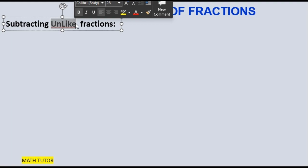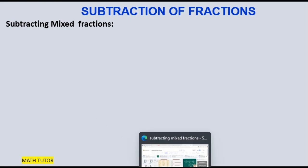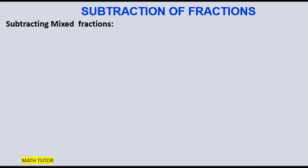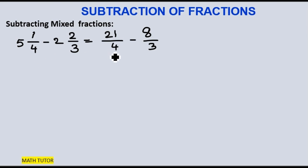Now we are going to see how to subtract mixed fractions. Let us take an example: 5 and 1 by 4 minus 2 and 2 by 3. This is a mixed fraction. You cannot subtract as it is — you have to convert them into improper fractions first, then proceed with the subtraction. So: 5 times 4 is 20, 20 plus 1 is 21 by 4. Minus: 2 times 3 is 6, 6 plus 2 is 8 by 3. I have now converted mixed fractions into unlike fractions.